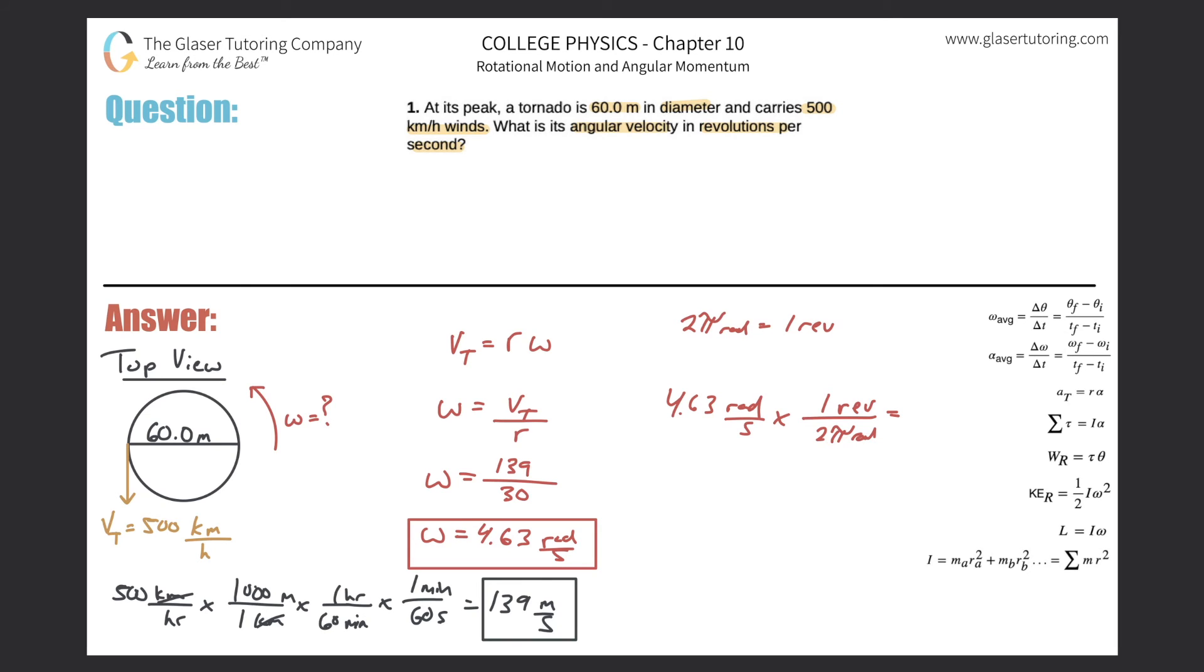And the units of the radians will cancel, leaving us with revolutions. So take that and divide it by then 2 times π, and here we go. So we get a value of 0.737 revolutions per second, and that would be the final answer.